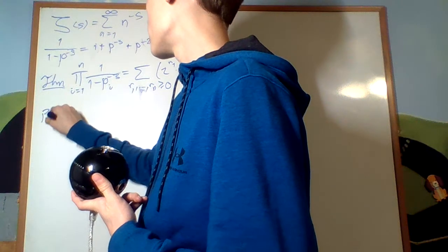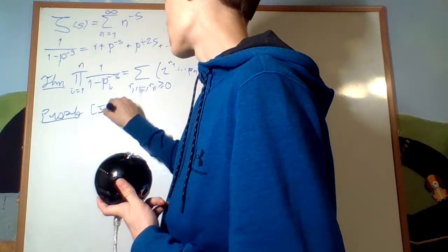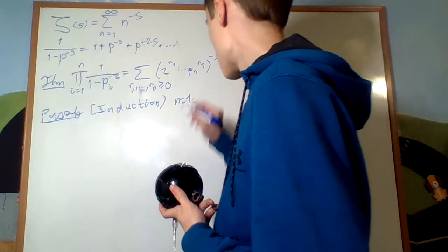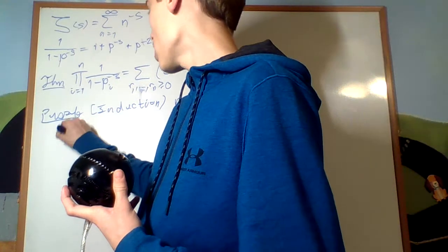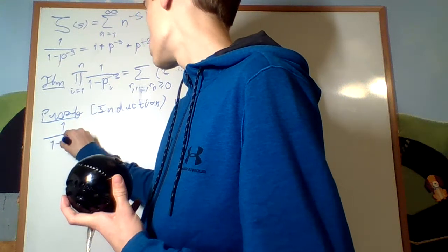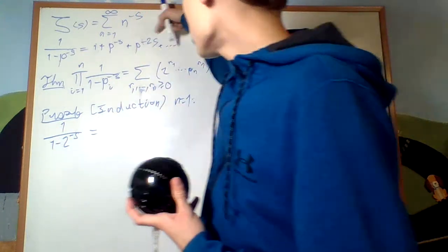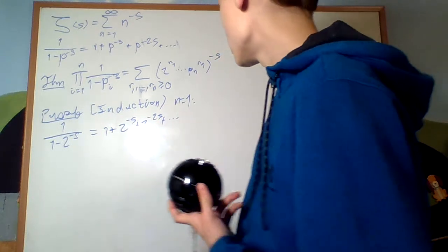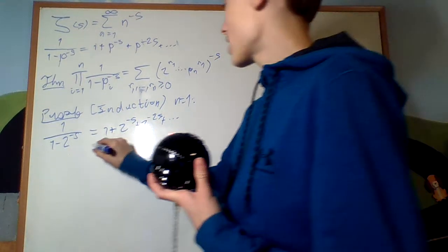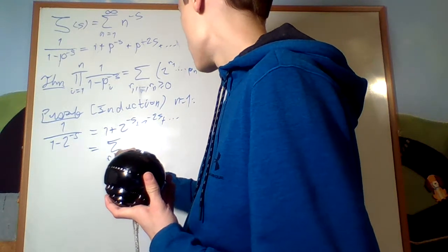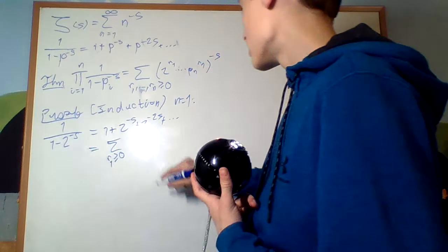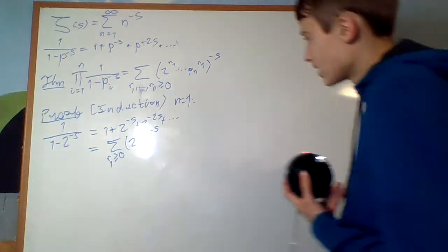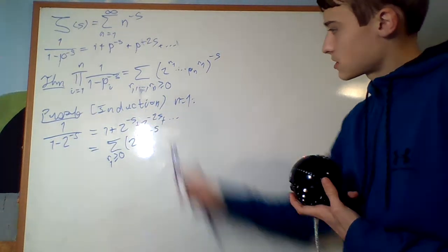Proof by induction. For n equals 1: 1 over 1 minus 2 to the negative s, by this formula, equals 1 plus 2 to the negative s plus 2 to the negative 2s plus and so on. That is precisely equal to the sum for r1 bigger than or equal to 0 of 2 to the r1 to the power of negative s. That's precisely what this theorem states for the base case.